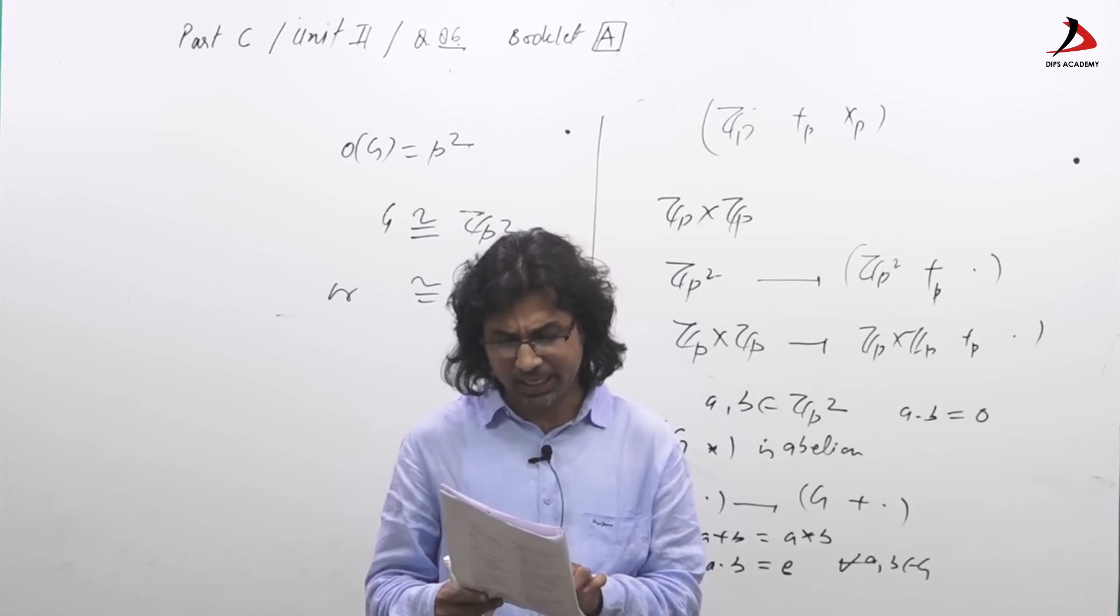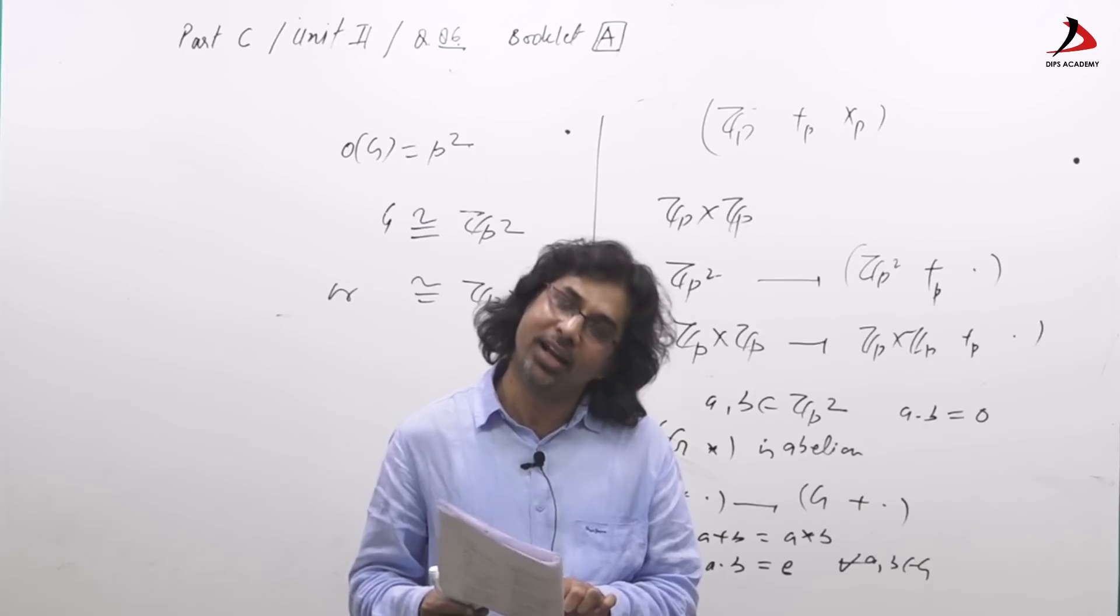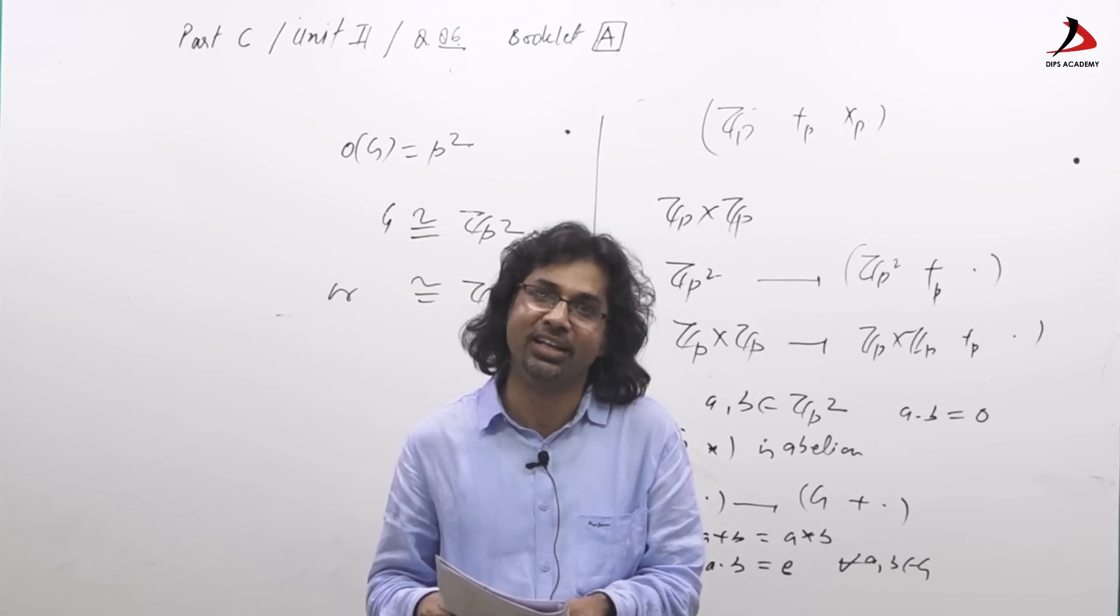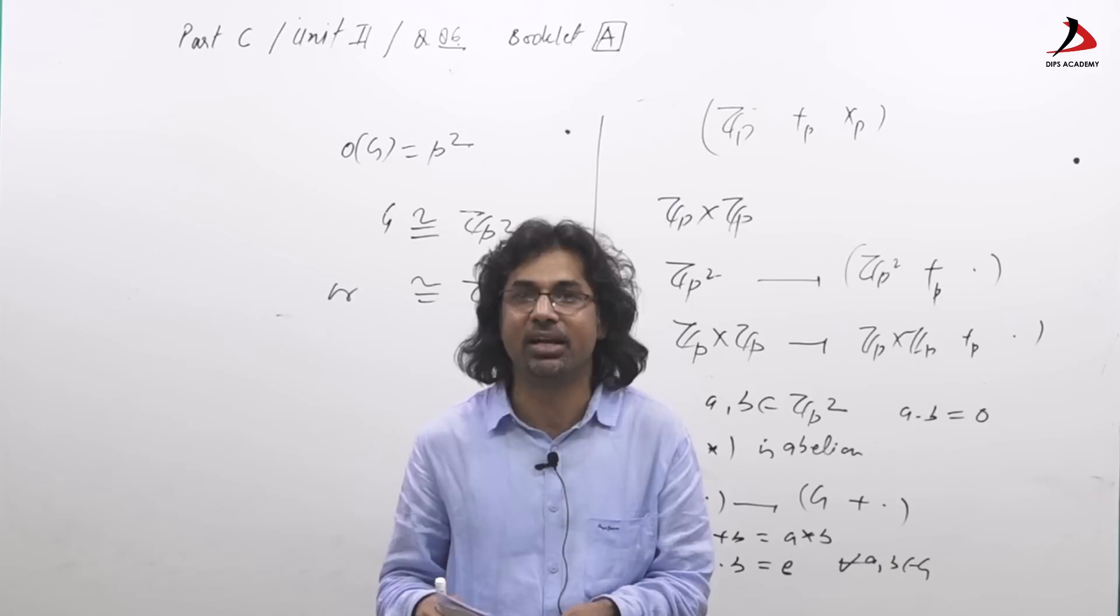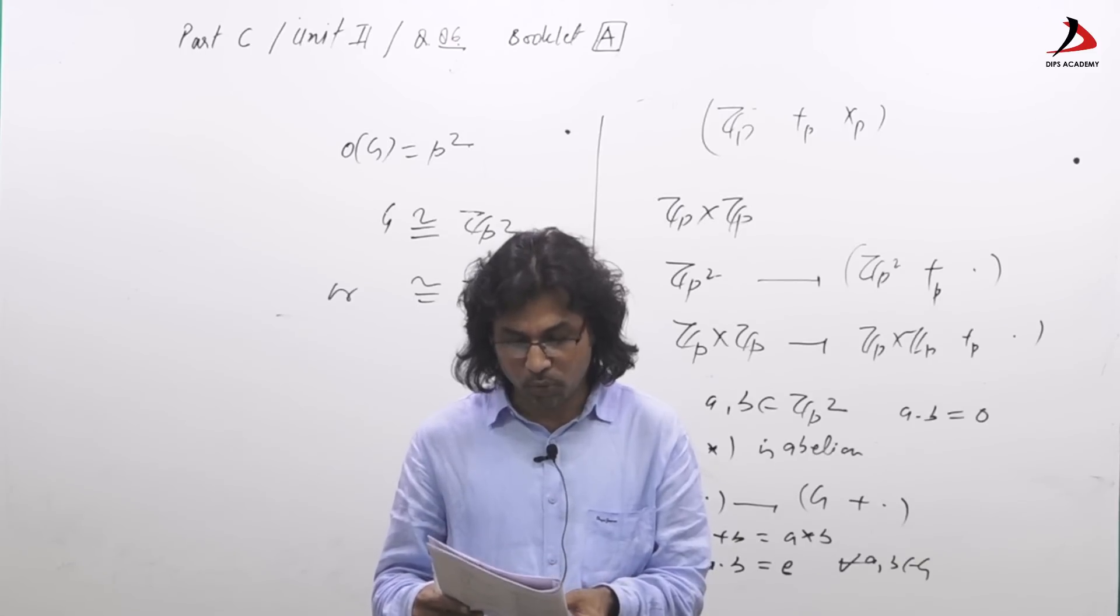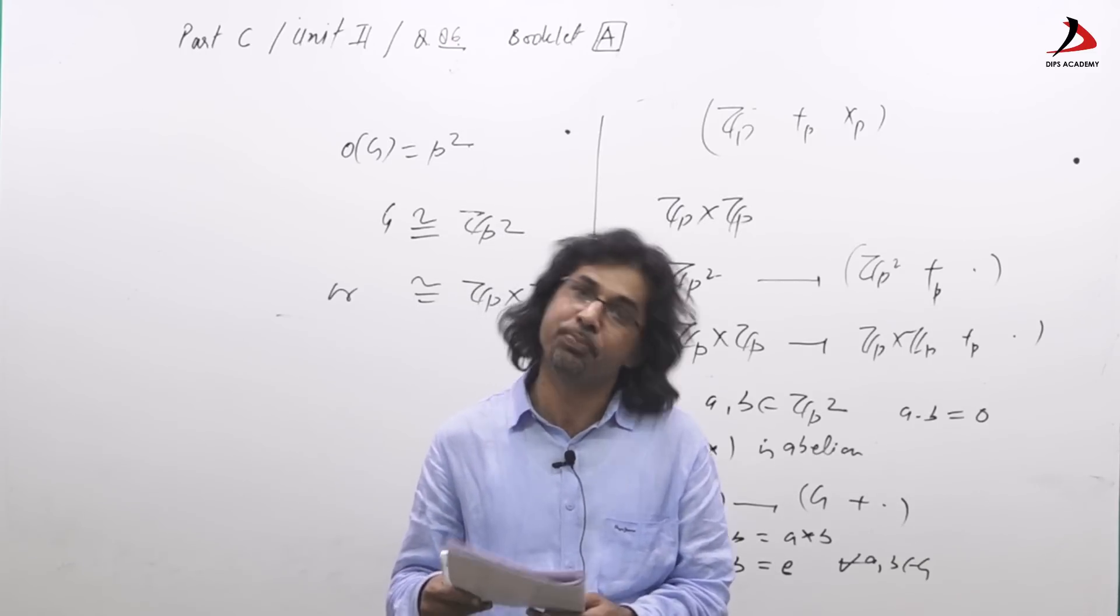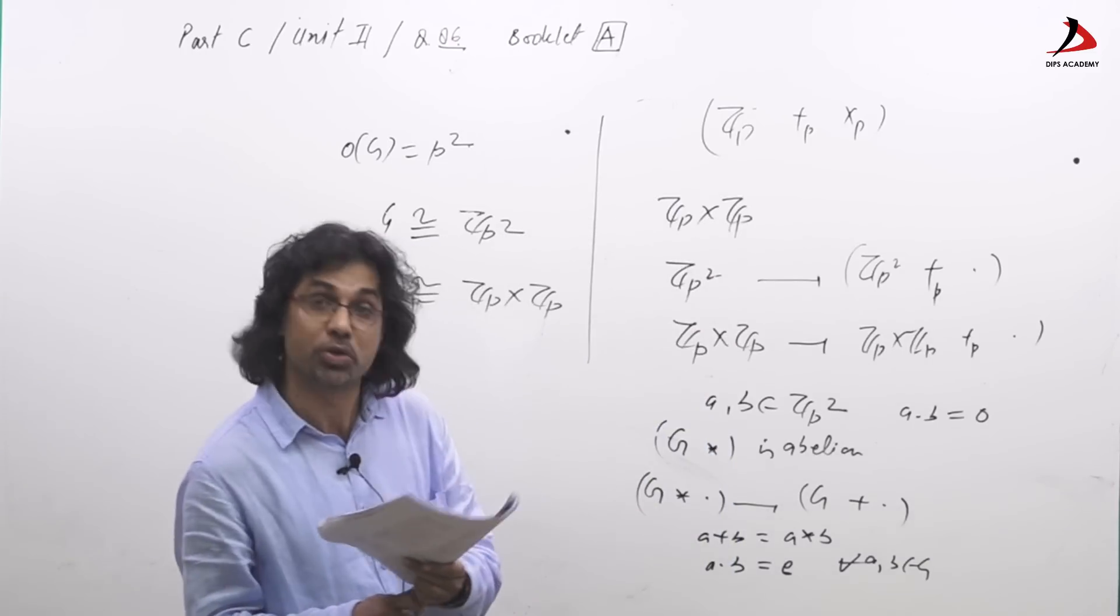When they say there is exactly one integral domain of order P square, it is certainly true because it has to be field then, and any two field of same cardinality are isomorphic. There is only one integral domain of order P square. Option four is also correct.